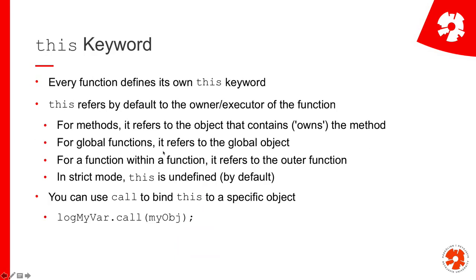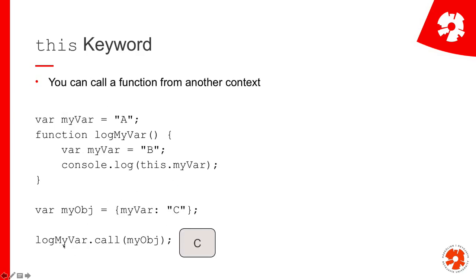And finally, if we have a function within a function, `this` would refer to the outer one. If we use strict mode, `this` is undefined by default, so you actually have to use something like the `.call()` function to be very specific. You can use call to say: call logmyvar from this object. Then automatically, `this` is being pointed to whatever is in there. I'm calling logmyvar from the context of my object, which means this points to my object - so this.myvar is C.